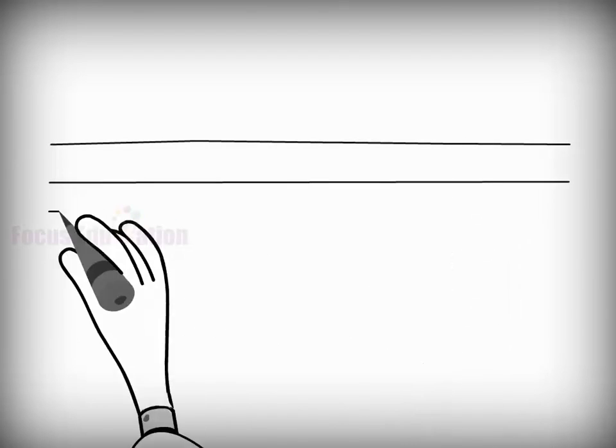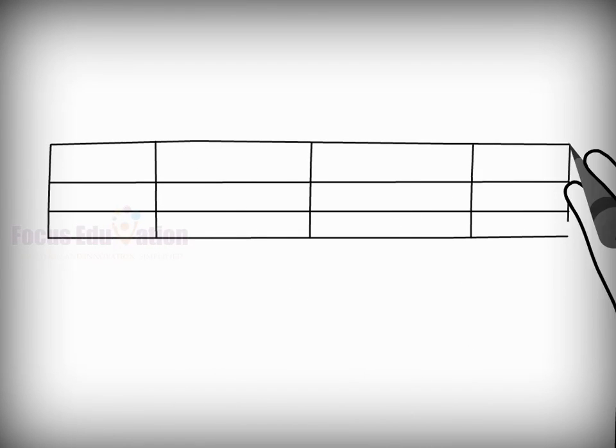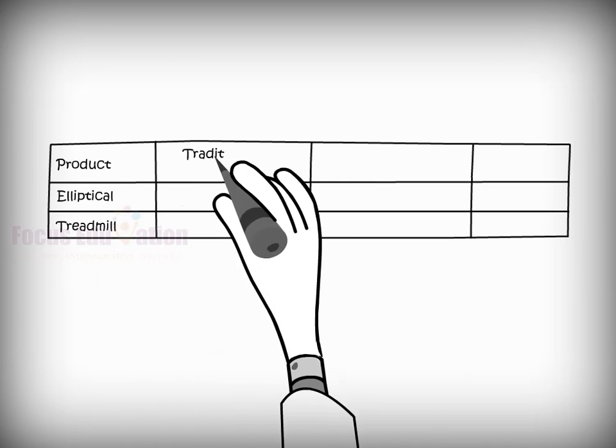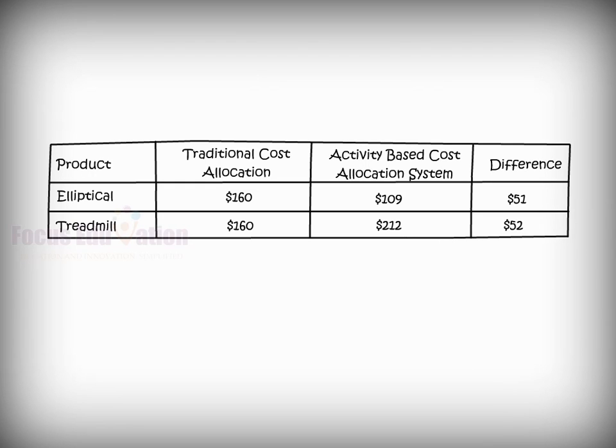With each allocation system rendering a different amount of manufacturing overhead to each elliptical and treadmill produced, it led the management to notice that the traditional cost allocation system had been severely distorting costs. Each elliptical had been over-costed by $51, and each treadmill had been under-costed by $52.